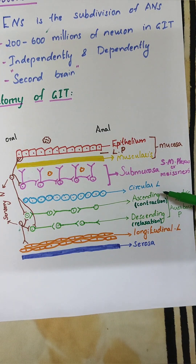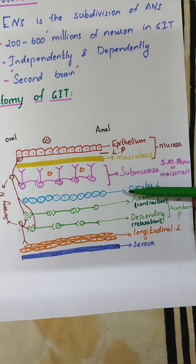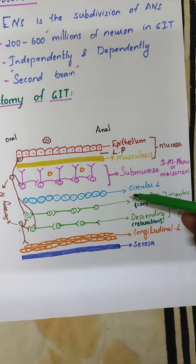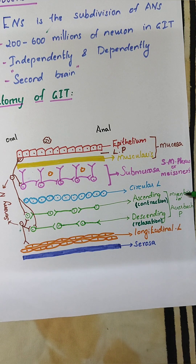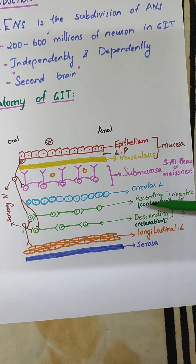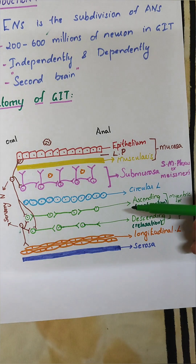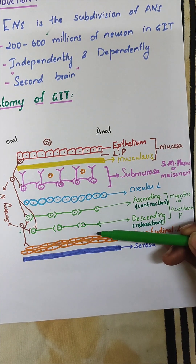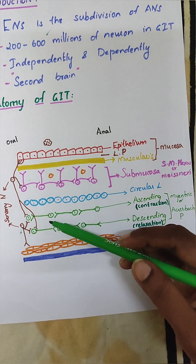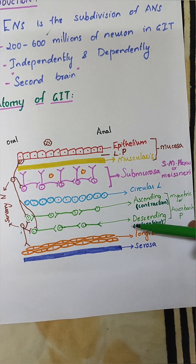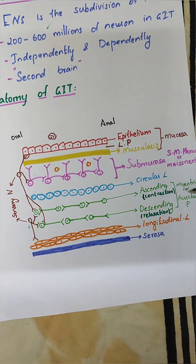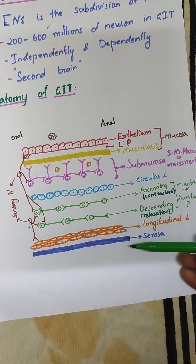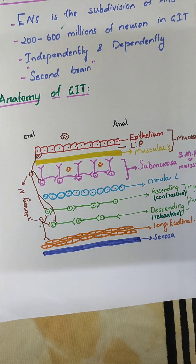Next comes the muscularis, specifically the muscularis externa, which consists of two layers: the circular layer and the longitudinal muscle layer. In between the circular layer and the longitudinal muscle layer, there is a plexus known as the myenteric plexus or Auerbach's plexus. It consists of ascending nerve fibers and descending nerve fibers. The ascending nerve fibers run from the oral cavity to the anal canal, and the descending nerve fibers run from the anal canal to the oral cavity. The outermost layer is known as the serosa.